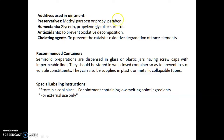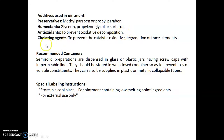Additives used in ointments include preservatives such as methylparaben or propylparaben; humectants such as glycerin, propylene glycol, or sorbitol; and antioxidants, which are used to prevent oxidative decomposition — examples being BHA (butylated hydroxyanisole) and BHT (butylated hydroxytoluene). A chelating agent is used to prevent catalytic oxidative degradation by trace elements.